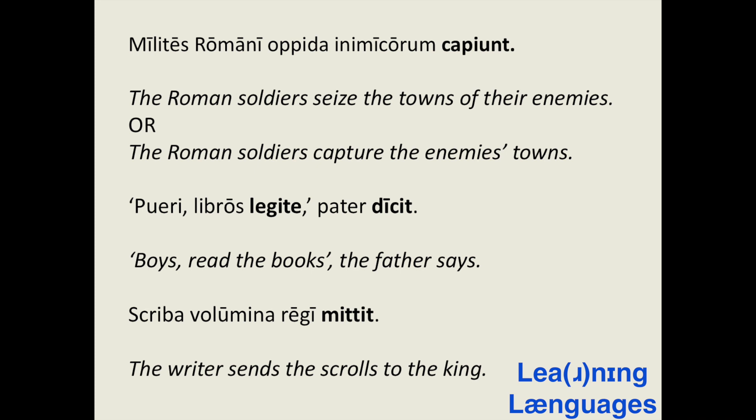Here we have two examples of third conjugation verbs: legite and dicit. Legite is a plural imperative meaning 'read,' and dicit is a third person singular third conjugation verb meaning 'he says.' So the father is telling the boys to read the books. The sentence translates as: boys, read the books, the father says.